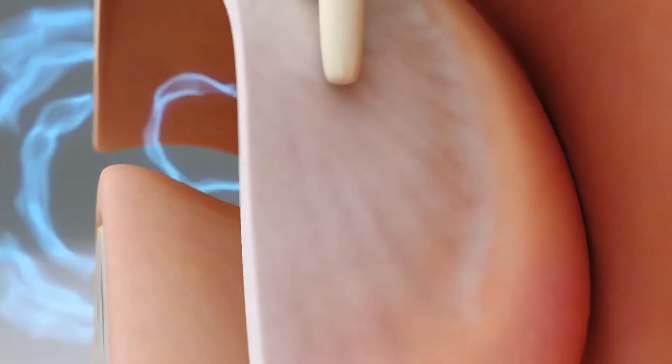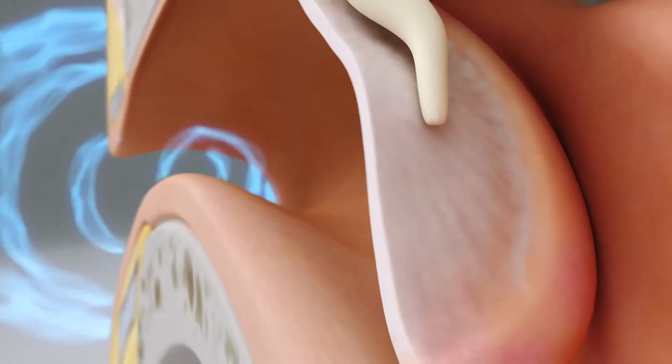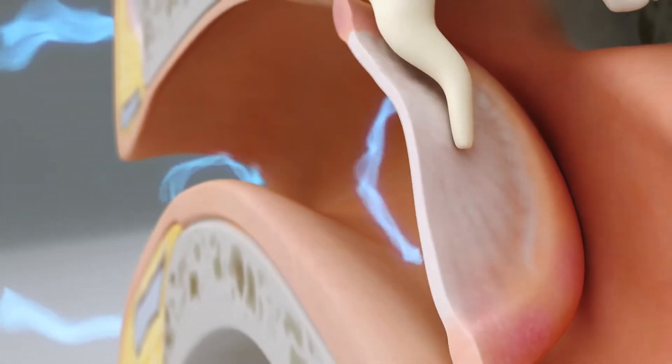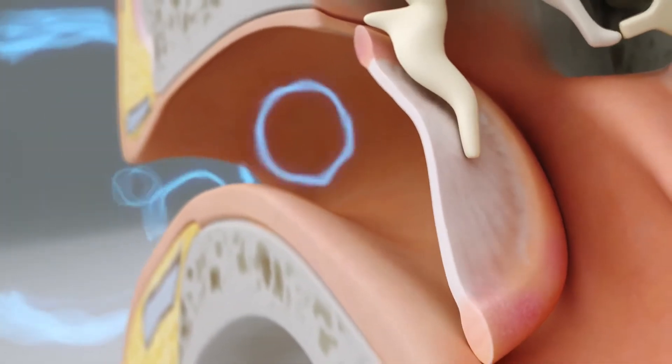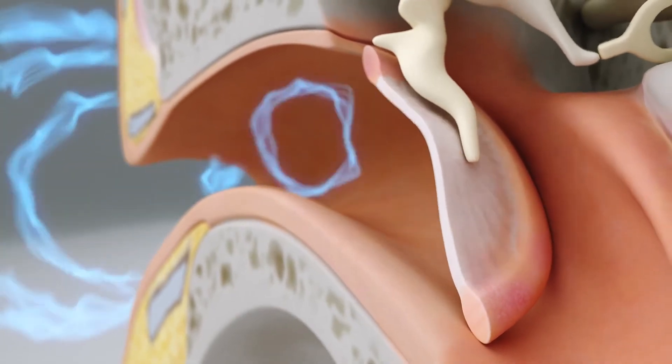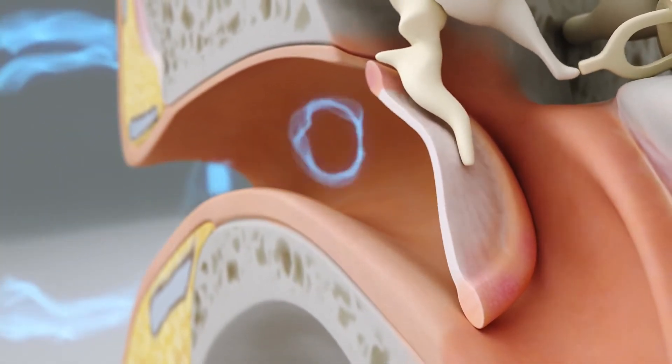The sound arrives at the eardrum, a flexible circular membrane which starts to vibrate when sound waves strike it. The sound waves are passed on by the movement of the eardrum to the middle ear.